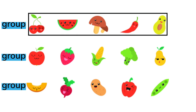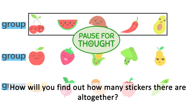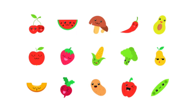Here, there are three groups of stickers, with five stickers in each group. How will you find out how many stickers there are altogether? When there are equal groups, you can multiply to find out how many there are altogether.